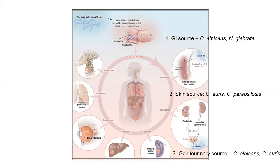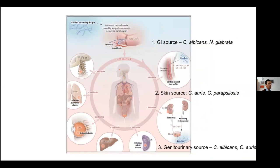Moving on to pathogenesis: invasive disease caused by Candida requires firstly an increased fungal burden, secondly some sort of alteration of the skin and mucosal surface, and often these two problems are amplified by the presence of prosthetic material — IV catheters, urine catheters, etc. — as Candida forms biofilms on this prosthetic material. From a gastrointestinal source point of view, Candida albicans and Nakaseomyces glabrata are endogenous fungi resident in the gastrointestinal tract.